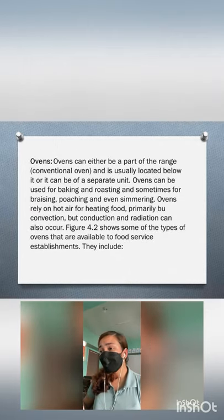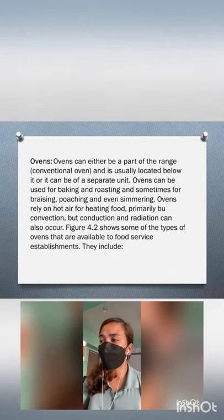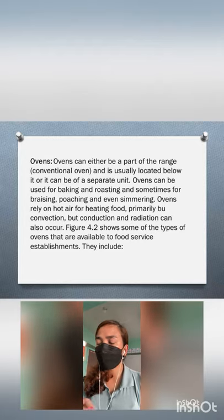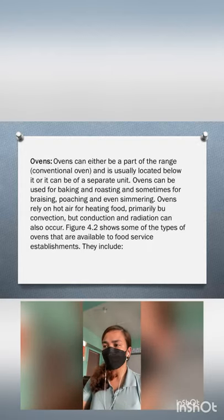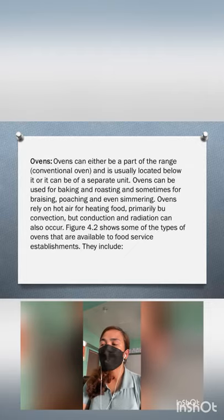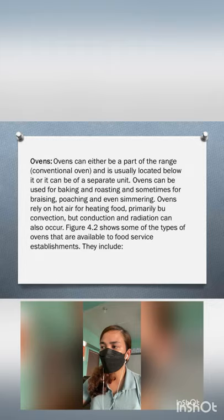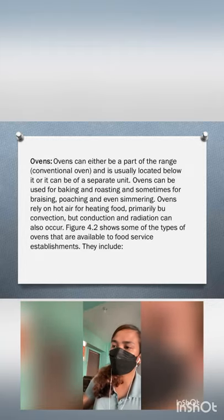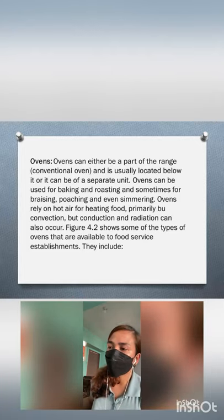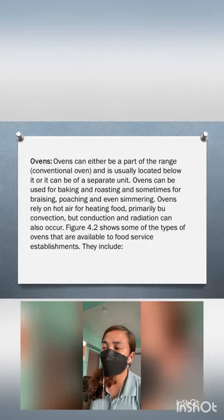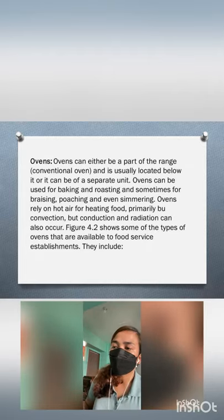Next, we have ovens. Ovens can either be part of the range, usually located below it, or a separate unit. They can be used for baking and roasting and sometimes for braising, poaching, and even simmering. Ovens rely on hot air for heating food, primarily through convection.